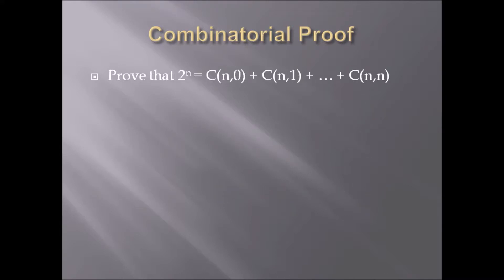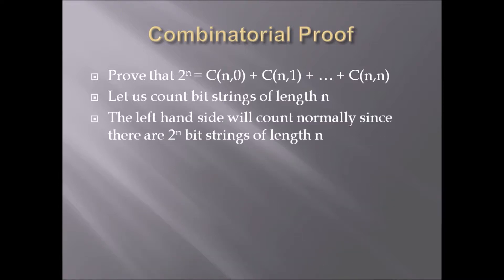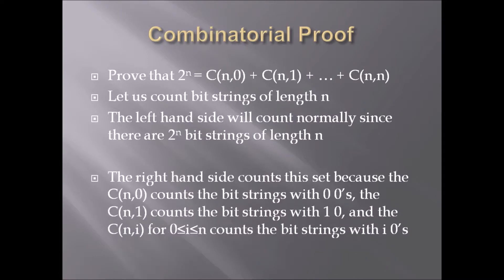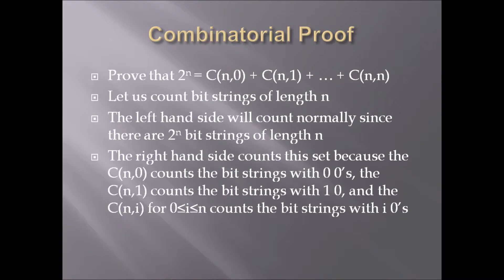Prove that 2^n equals C(n,0) + C(n,1) + ... + C(n,n). Let us count bit strings of length n. The left-hand side is easy because we know there are 2^n bit strings of length n.